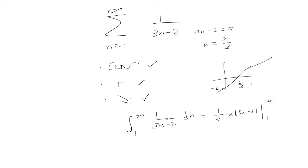And hopefully you're convinced that this is the antiderivative. As n approaches infinity we know that 1 third ln of 3n minus 2 also approaches infinity. So this series would have to diverge since the integral is not finite.